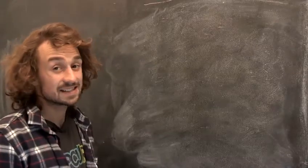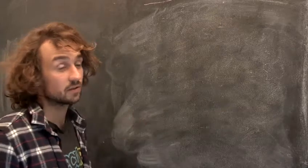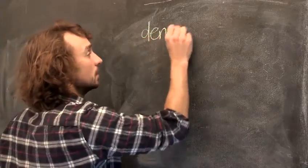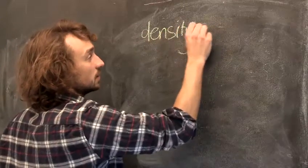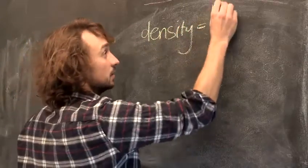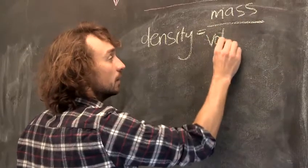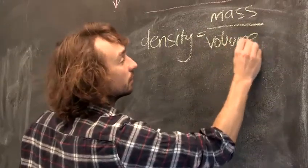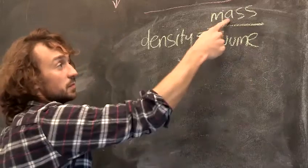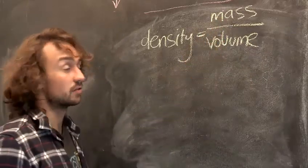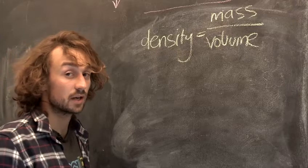So density is simple. It's just two numbers you need to find out. Density is your mass divided by your volume. Now while that looks simple enough, actually to find your mass and to find your volume is slightly difficult, especially if the object you're looking for is irregular.